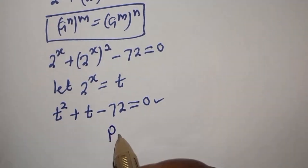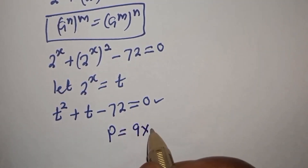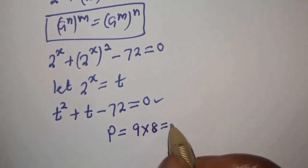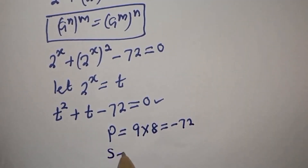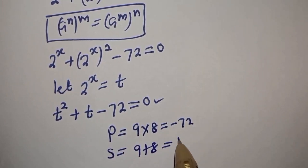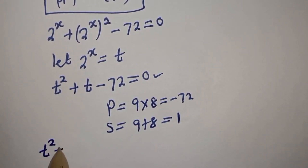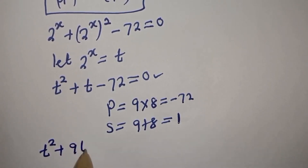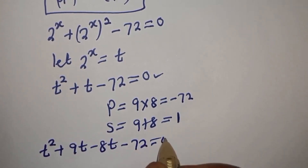The product is equal to 9 multiplied by negative 8, which equals minus 72. The sum is equal to 9 plus negative 8, which equals 1. Now substituting: t squared plus 9t minus 8t minus 72 is equal to 0.